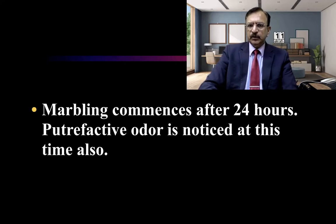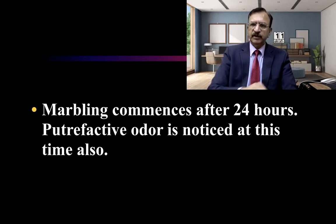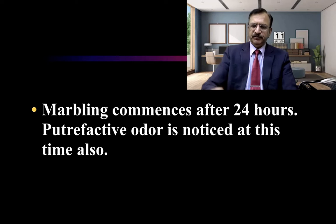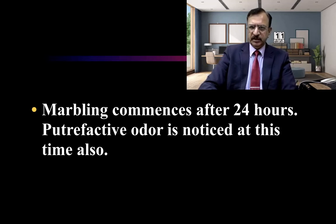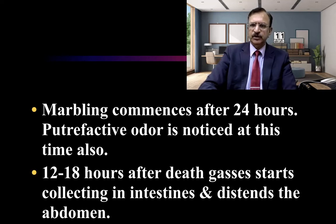Marbling is also seen after 24 hours. Marbling is basically the prominence of the superficial blood vessels in an arborescent pattern, due to change in the color of the blood, which becomes greenish or bluish. This putrefactive color change occurs because of the disintegration of hemoglobin and conversion into bilirubin, biliverdin, hematoidin, and hemosiderin. The greenish coloration is because of hematoidin, and this arborization pattern is known as marbling, which appears 24 hours after death.